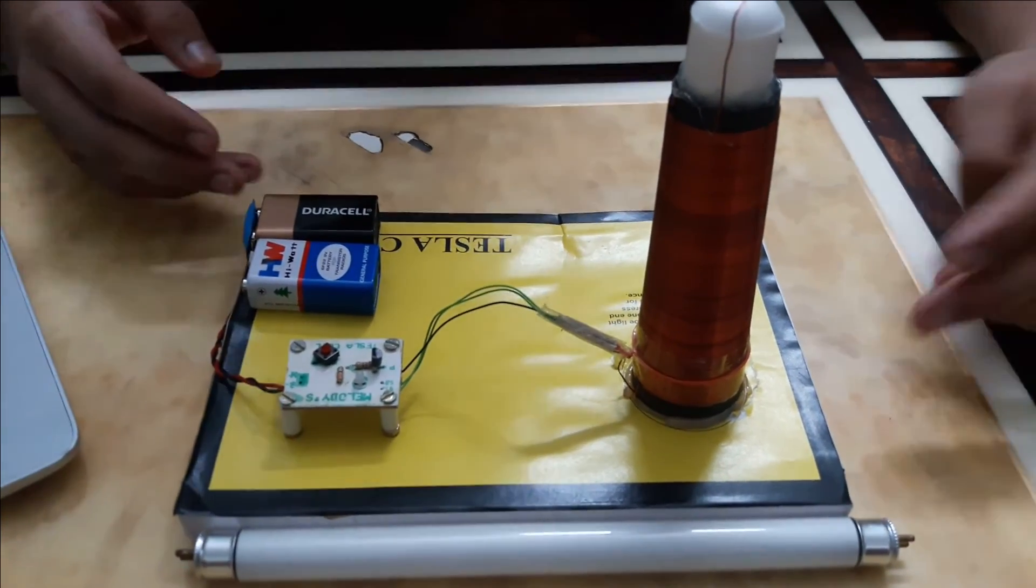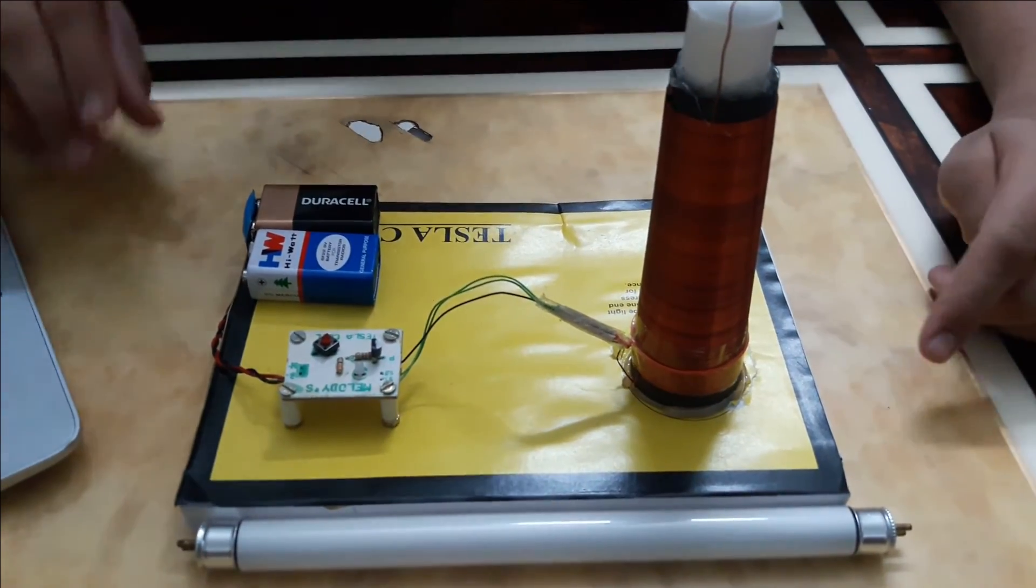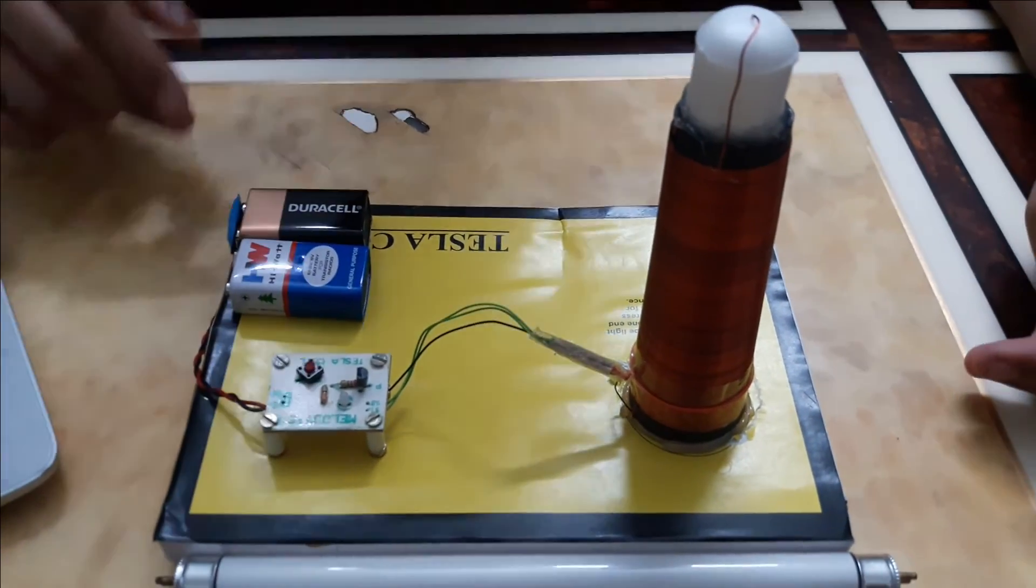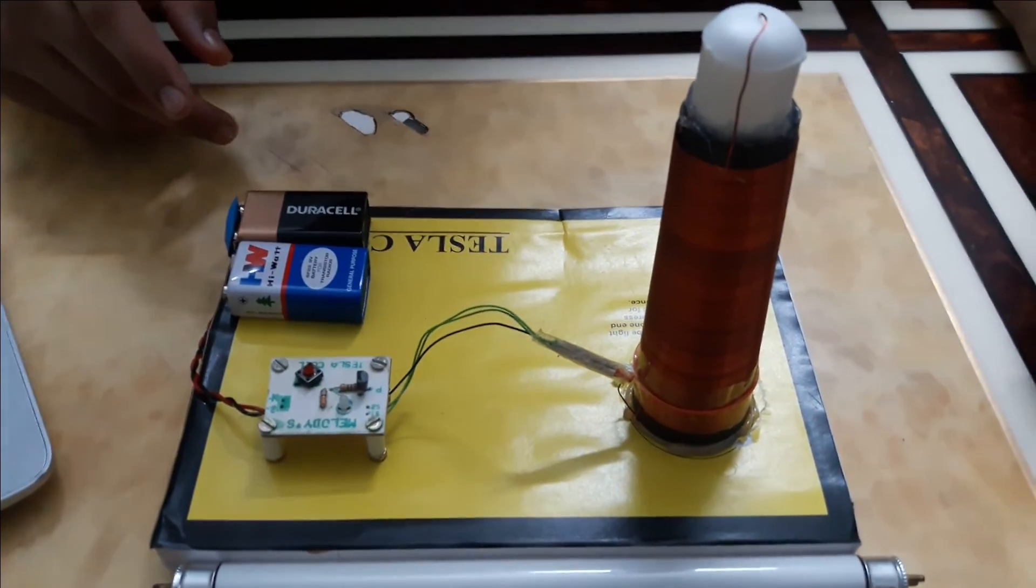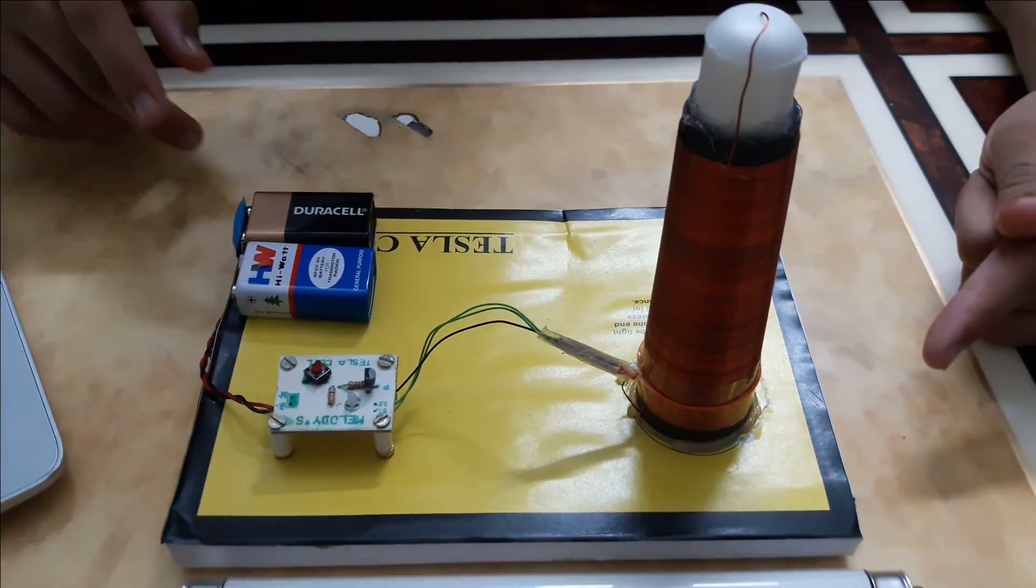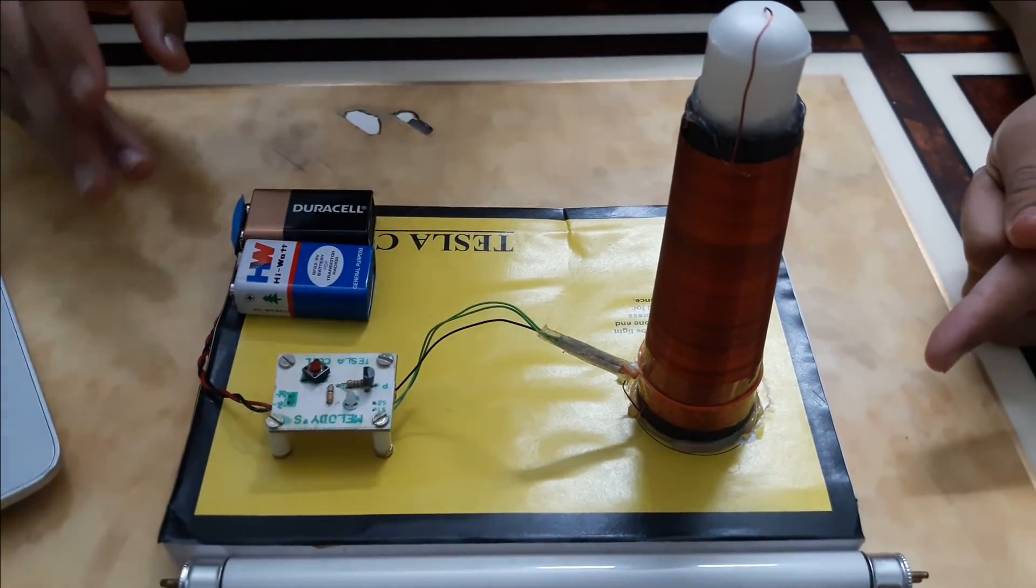We have a primary coil which has an oscillating current, hence we produce a varying magnetic flux around it. Now this coil is wound around the secondary coil, hence according to the laws of electromagnetic induction, a voltage will be induced in the secondary coil.